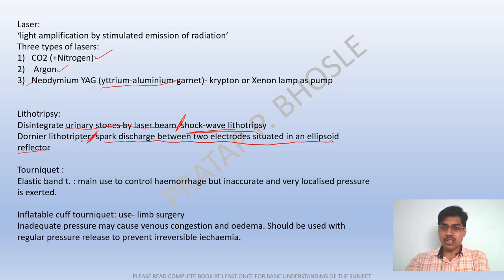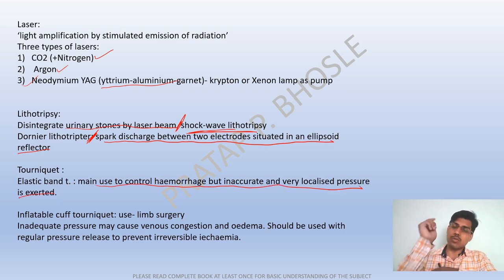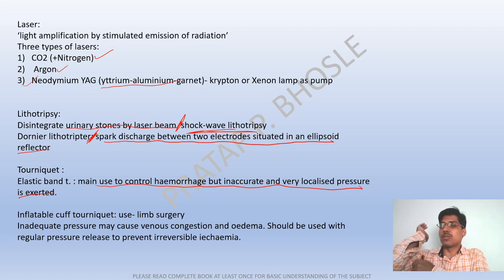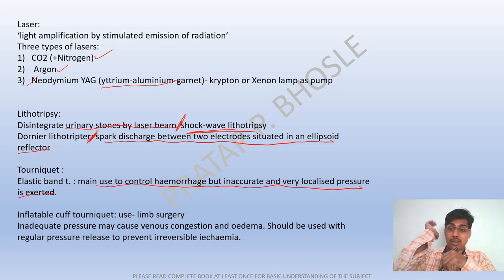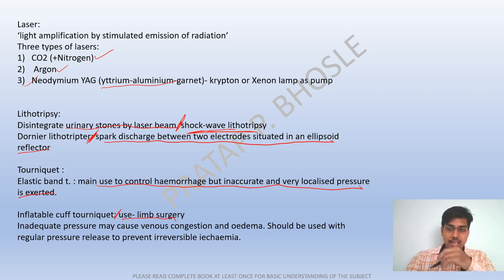Dornier lithotripsy is also called spark discharge lithotripsy — it involves spark discharge between two electrodes situated in an ellipsoid reflector. A tourniquet is an elastic band mainly used to control hemorrhage, but it exerts inaccurate, very localized pressure. The inflatable cuff tourniquet is used in limb surgery; inadequate pressure may cause venous congestion and edema.